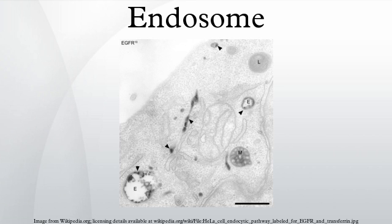Early endosomes consist of a dynamic tubular vesicular network. Markers include RAB5A, RAB4, transferrin and its receptor, and EEA1. Late endosomes, also known as MVBs, are mainly spherical, lack tubules, and contain many close-packed luminal vesicles. Markers include RAB7, RAB9, and mannose-6-phosphate receptors. Recycling endosomes are concentrated at the microtubule organizing center and consist of a mainly tubular network. Marker: RAB11. More subtypes exist in specialized cells such as polarized cells and macrophages.